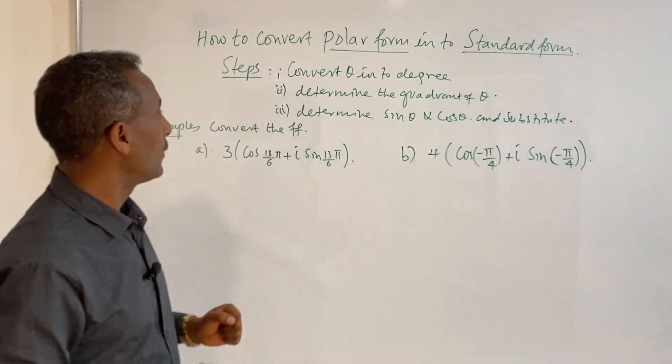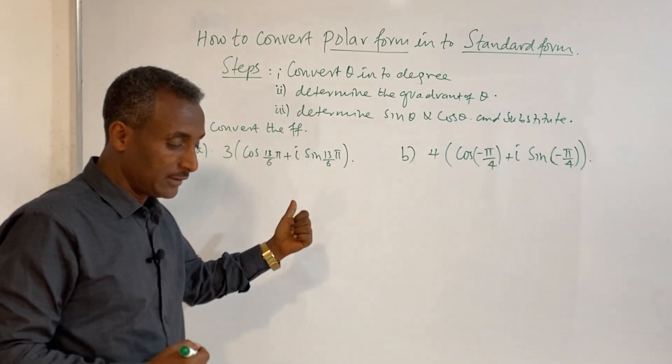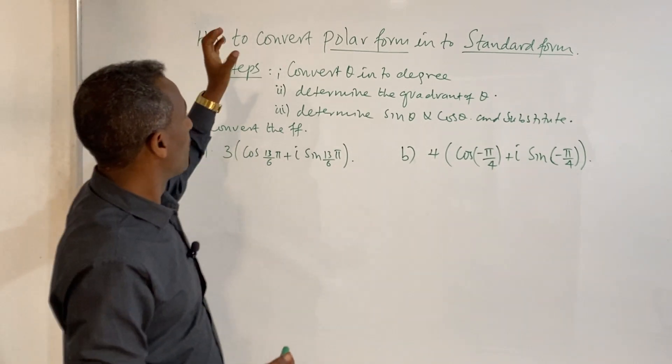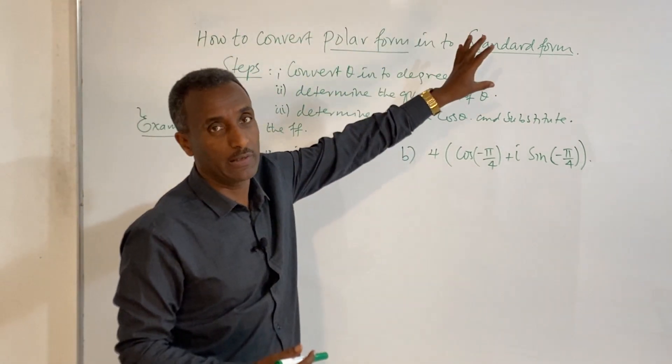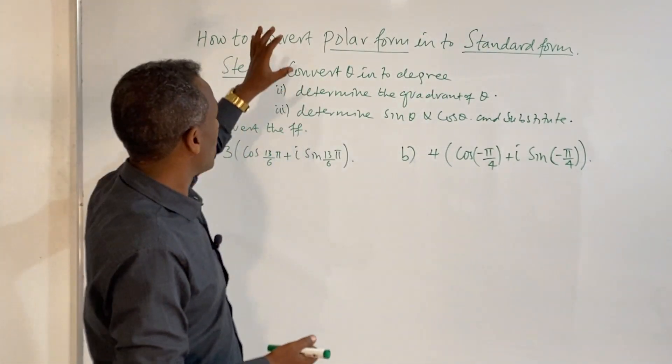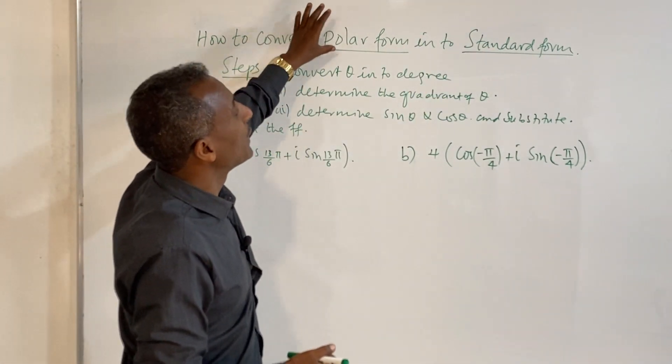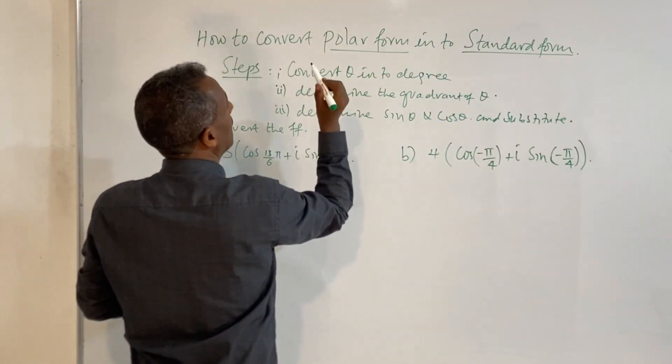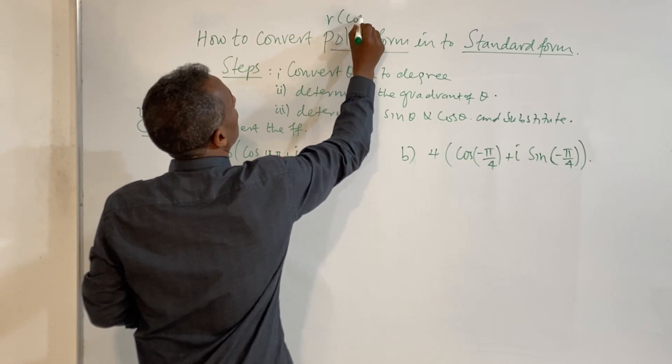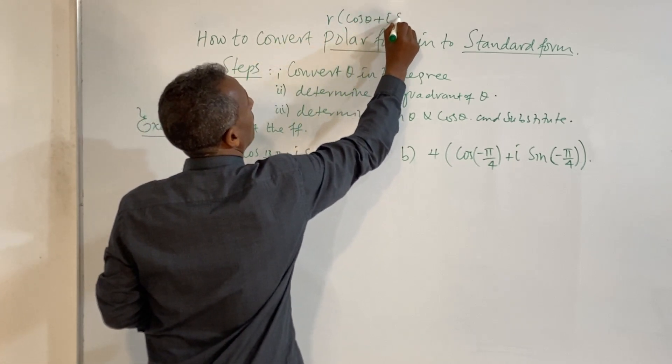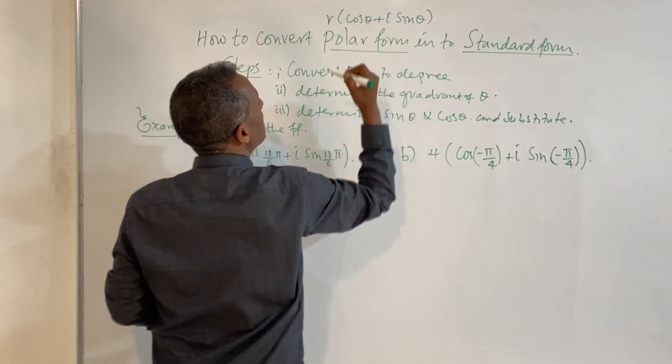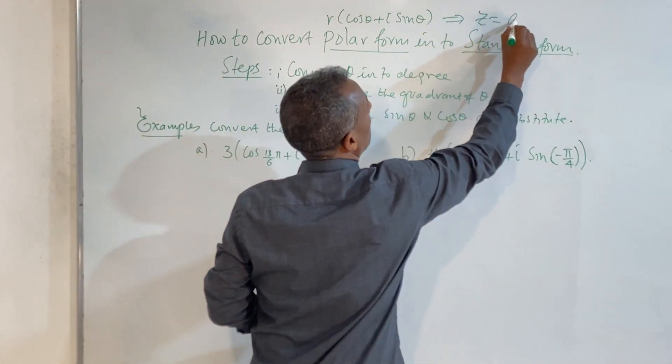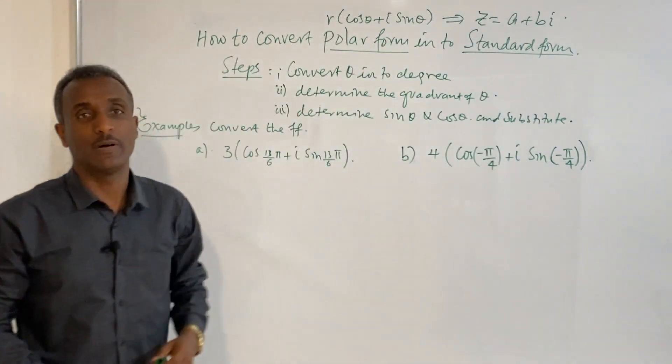Hello everyone, welcome back to this video. This is polar form and standard form. This is a complex number. Polar form is r(cos θ + i sin θ), and this is the standard form.